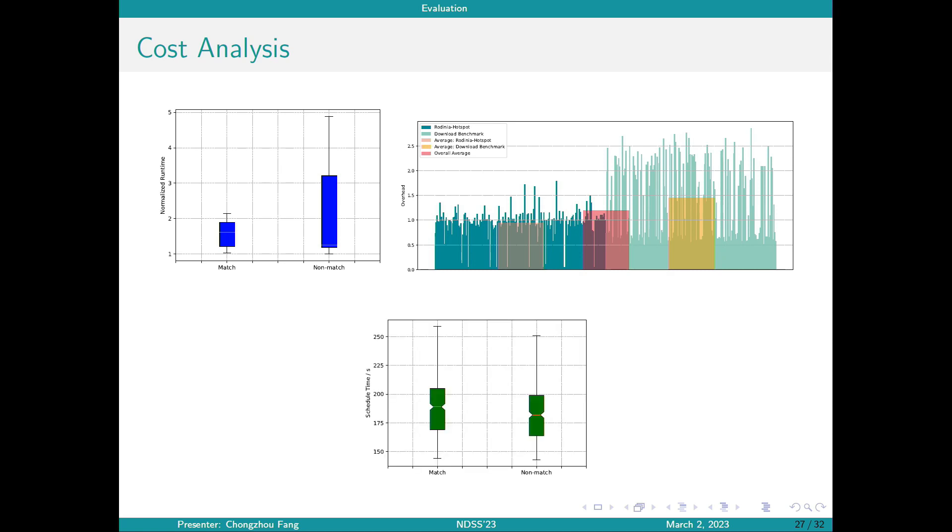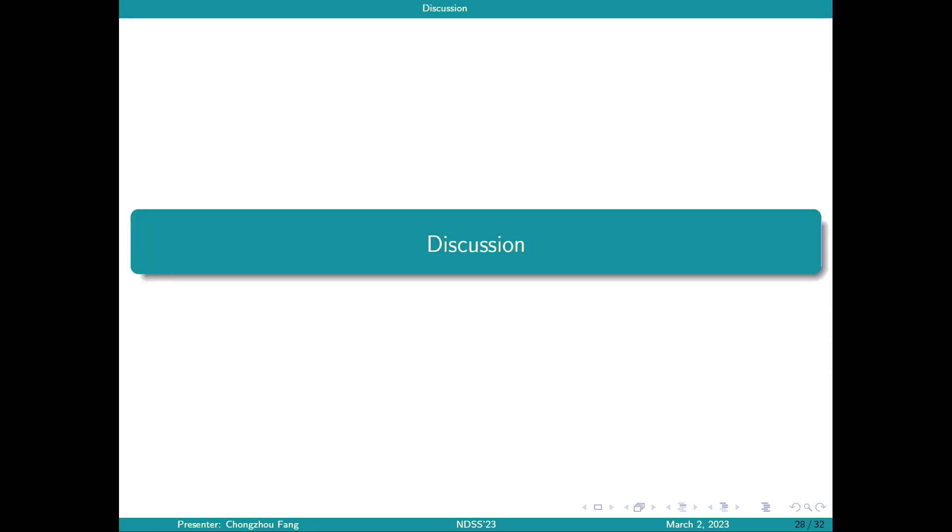When we take the schedule delay into consideration, there are some interesting findings. From this figure, we can see that heterogeneous to more scheduling is generally slower. This indicates that if we consider from the elapsed time perspective, the performance cost can be further compensated. For tasks with shorter runtime, the overhead won't be as high since the extended runtime is compensated by shorter scheduling delay.